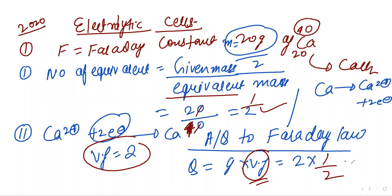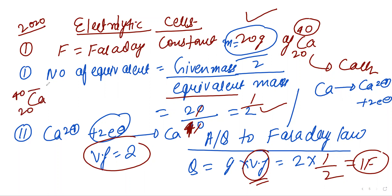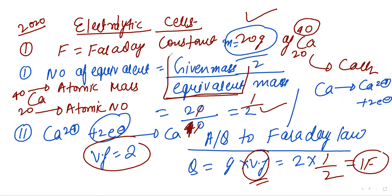So write it down: equivalent mass of calcium is 40/2 = 20. Number of equivalents equals given mass (20) upon equivalent mass (20) = 1. Therefore 1 Faraday of charge is required to produce 20 grams of calcium.